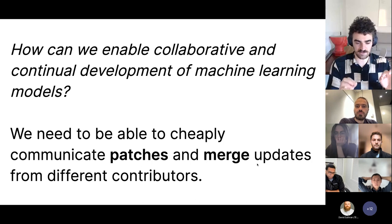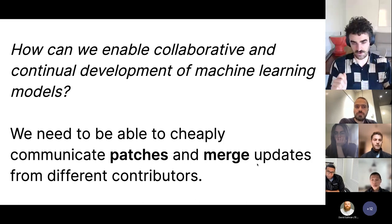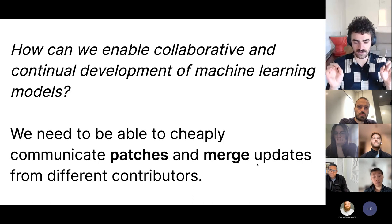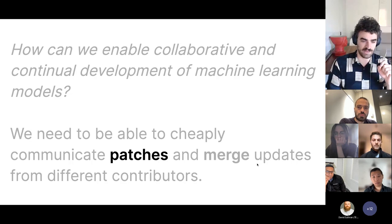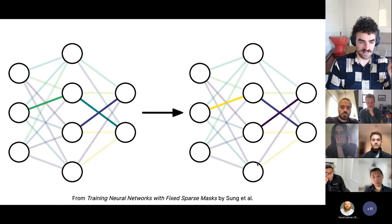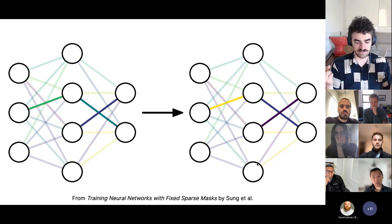Let me talk about some existing work that aims to make collaborative and continual development of machine learning models possible. I'll mention work on enabling cheaply communicable patches to a model, and also methods to merge updates from different contributors. First, let's talk about patches. I talked about two papers from my group along these lines, the first being a paper on a method called Fish Mask.